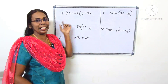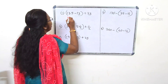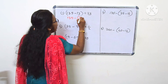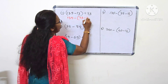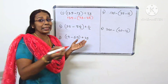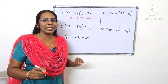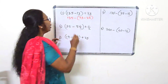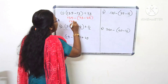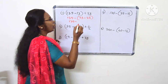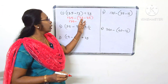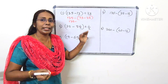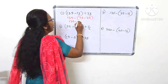We can do this. The first example: 138 minus 73 minus 23. We can work through it. That gives us 70. In the 90s it's 80.